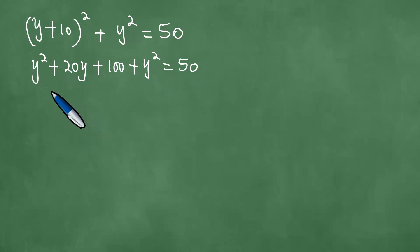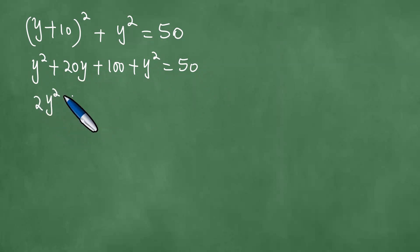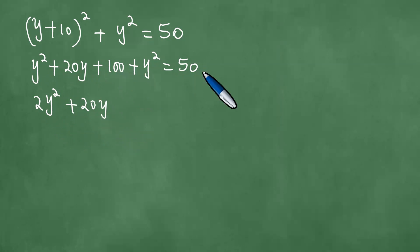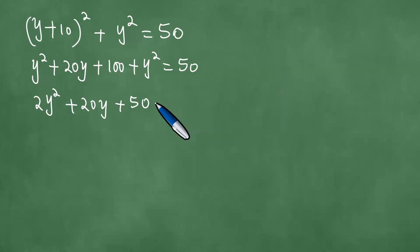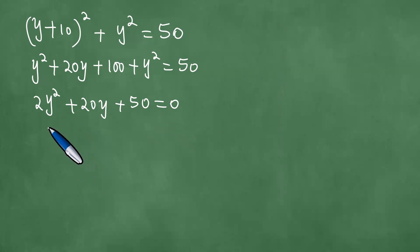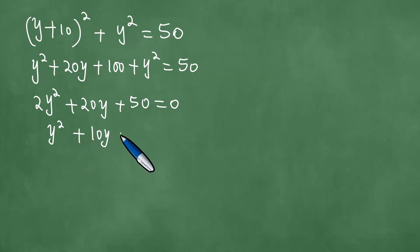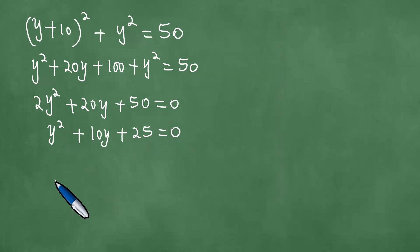Adding like terms together, y squared plus y squared gives us 2y squared, plus 20y, and 100 minus 50 gives us 50, equals 0. We can divide through by the highest common factor, 2, getting y squared plus 10y minus 25 equals 0.